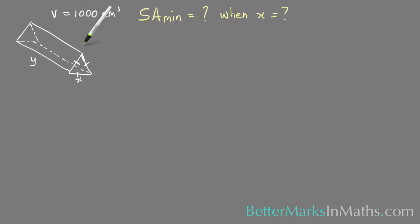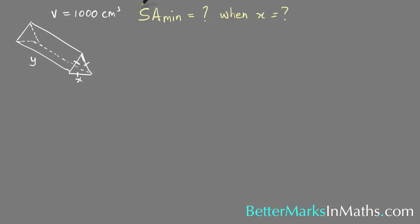In this question you have a triangular prism, its volume is 1000 centimeters cubed, and you're being asked to find the minimum surface area and the x value for when the surface area is a minimum. The first step is to get an expression for the surface area.